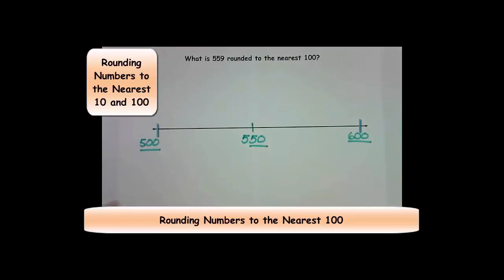I know that when I am rounding to the nearest 100, all my midpoints are going to end with a 50 because 50 is half of 100. 559 is only 9 more than 550, so it's probably about here. I know that that is closer to 600, so 559 would be rounded to 600.